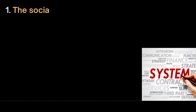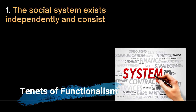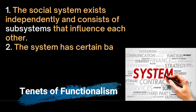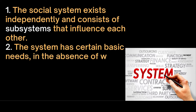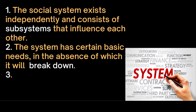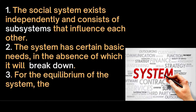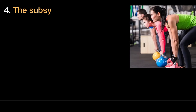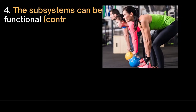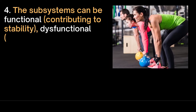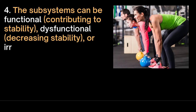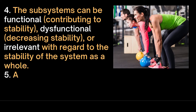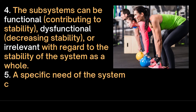The social system exists independently and consists of subsystems that influence each other. The system has certain basic needs, in the absence of which it will break down. For the equilibrium of the system, the needs of the subsystems must be met. The subsystems can be functional when they contribute to stability, or dysfunctional when they decrease stability, or irrelevant with regard to the stability of the system as a whole. A specific need of the system can be satisfied in different ways through functional equivalents.